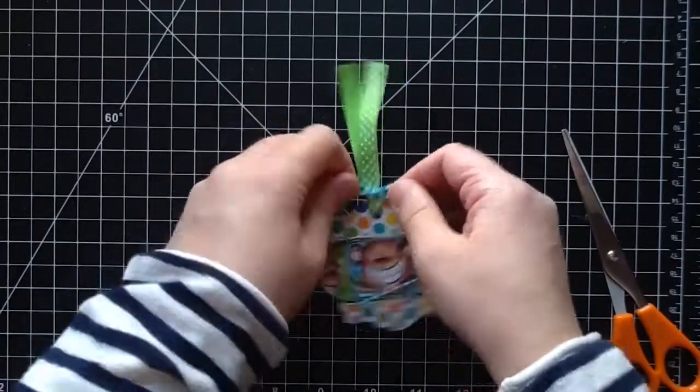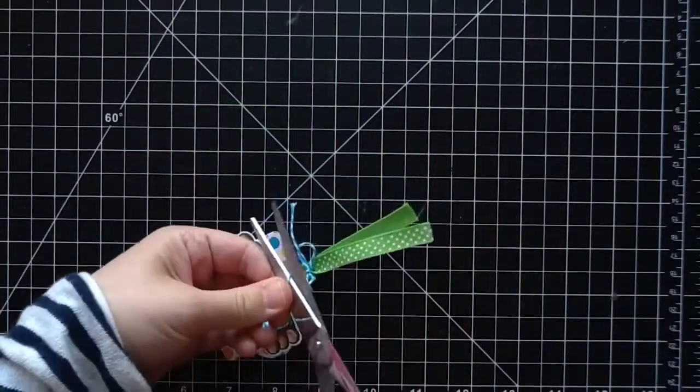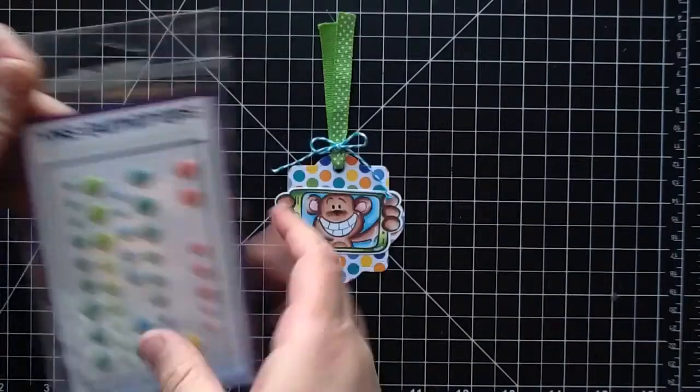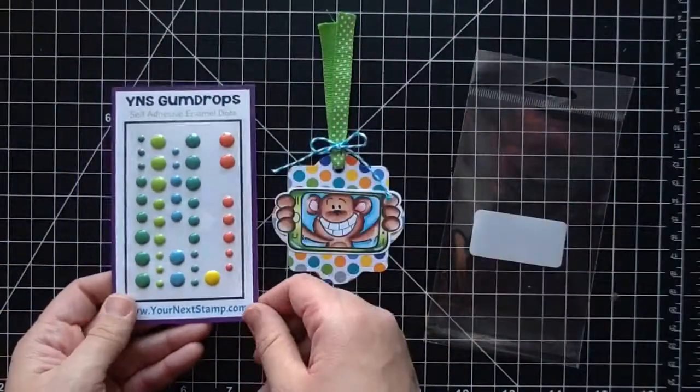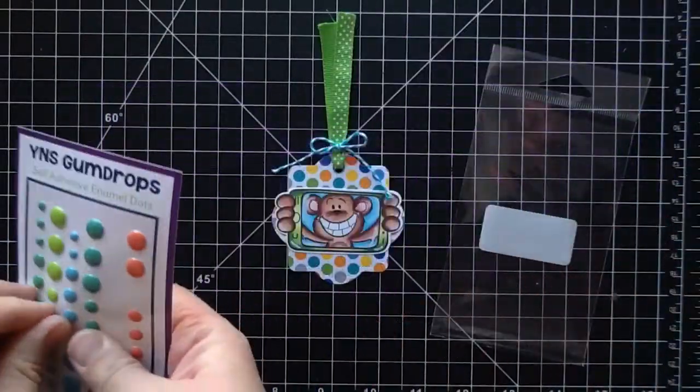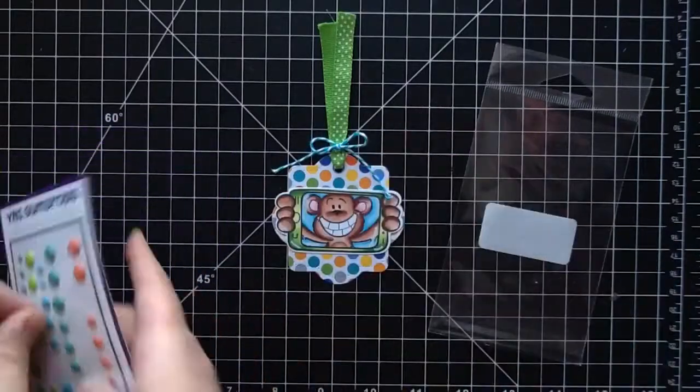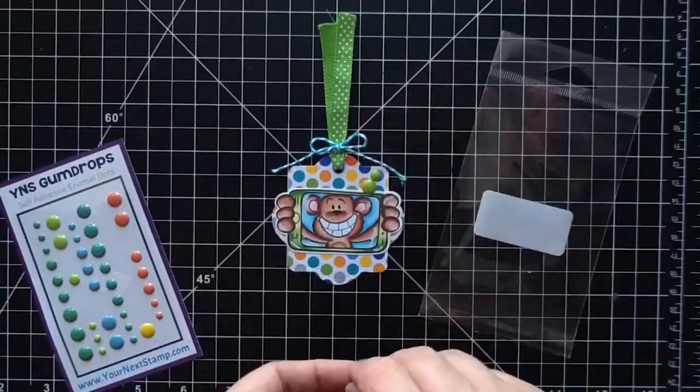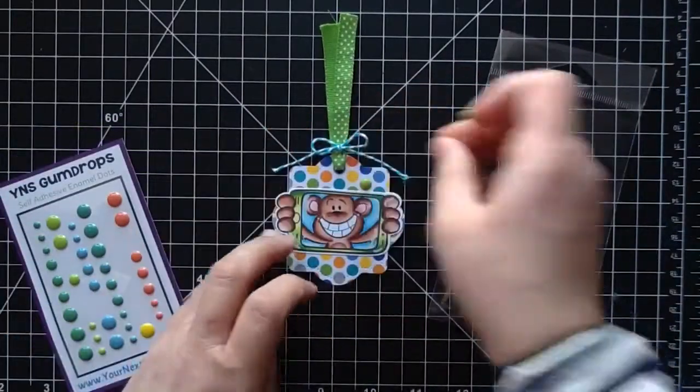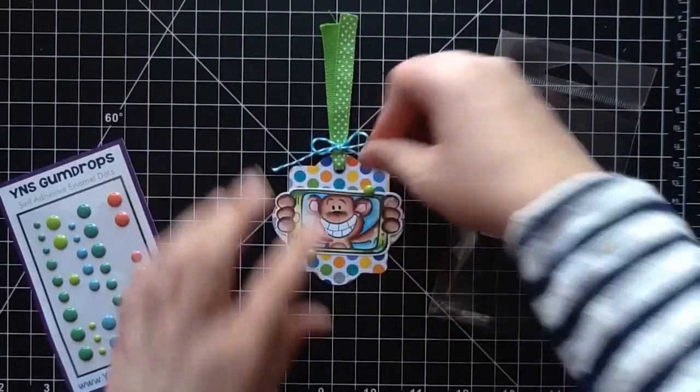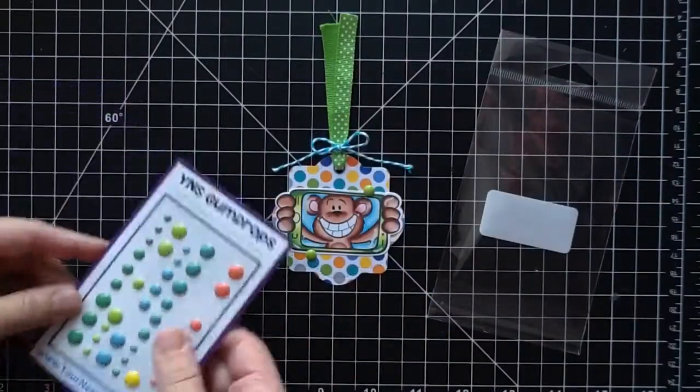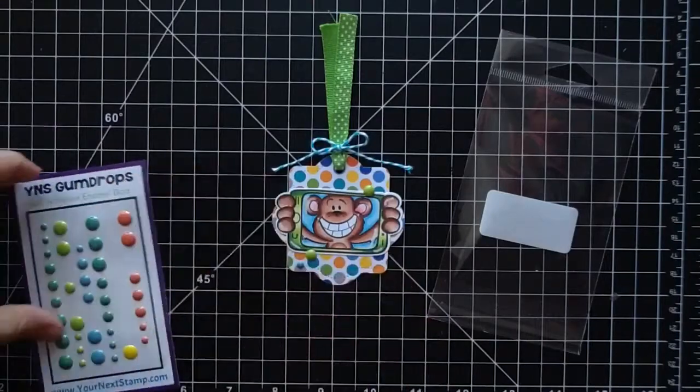I'm just making the little bow, and then I'm going to snip off the little pieces there. I pulled out these Your Next Stamp glossy gumdrops. I thought these would look awesome. I end up using two of the medium lime green ones and then two of the small blue ones. I think that looks so nice, and it really just adds a little bit of dimension there on the front. So that is my tag.